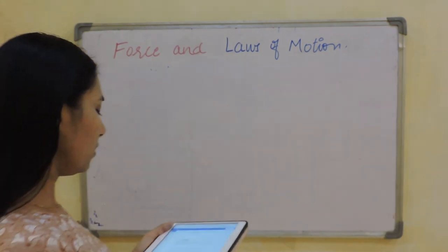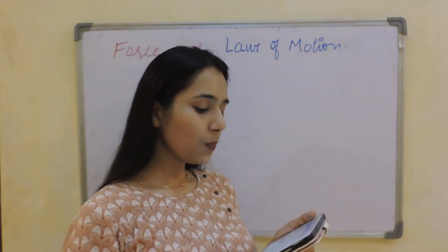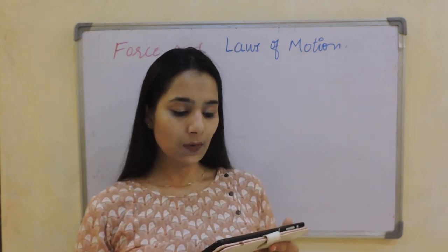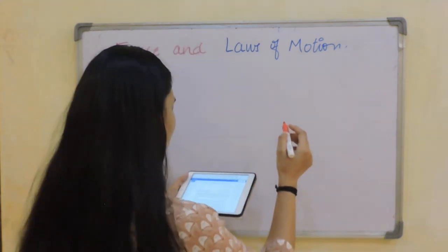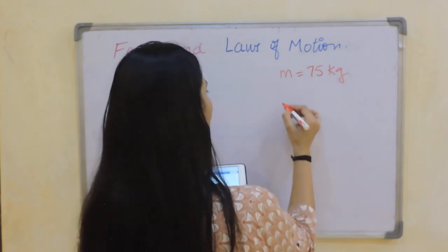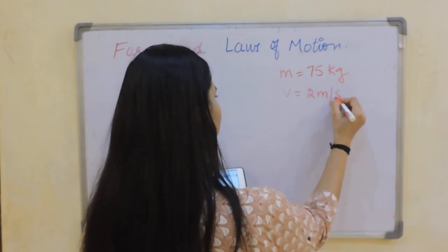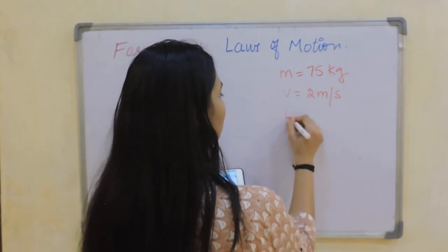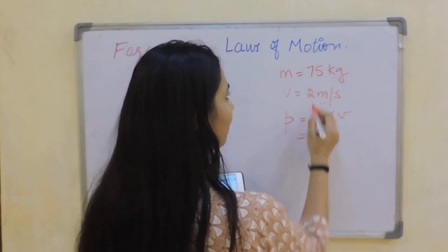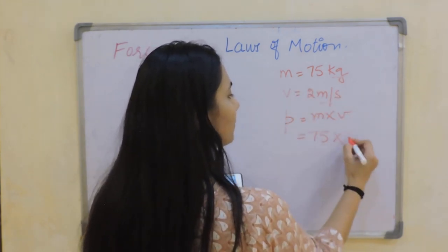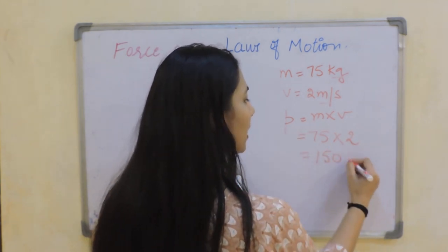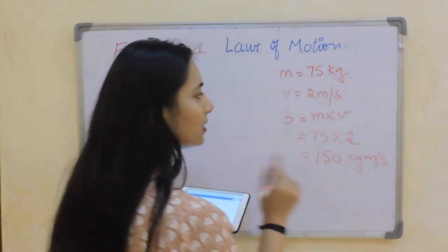Question 6: what is the momentum of a man of mass 75 kg when he walks with a velocity of 2 m/s? The mass is 75 kg and velocity is 2 m/s. Momentum equals mass times velocity, so momentum equals 75 times 2, giving 150 kg·m/s.